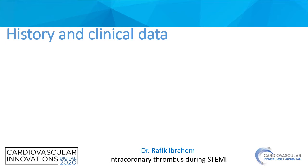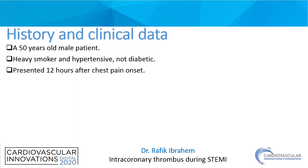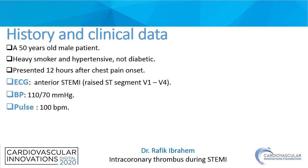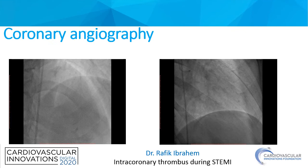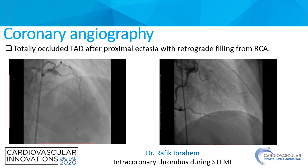History and clinical data. 50-year-old male patient, heavy smoker and hypertensive but not diabetic. He presented 12 hours after chest pain onset. ECG showed anterior STEMI, rest ST segment V1 to V4. Blood pressure was 110 over 70, pulse 100 beats per minute. CKMB and troponin were positive. ECHO showed marked septal wall and anterior wall hypokinesia with ejection fraction 50%. We decided to proceed with coronary angiography.